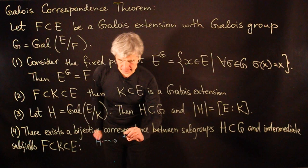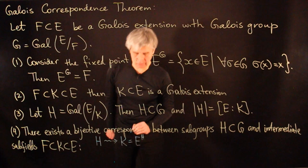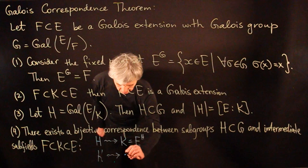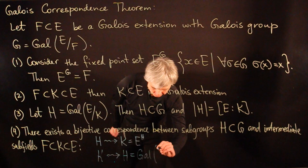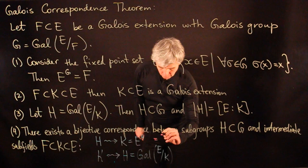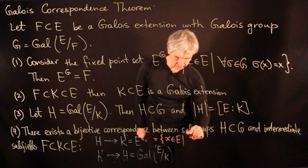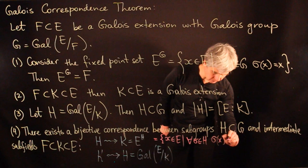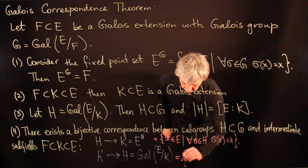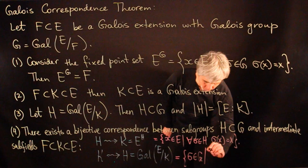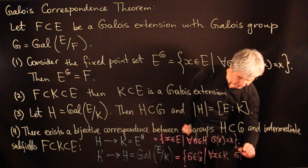Part four: there exists a bijective correspondence between subgroups H in G and intermediate subfields K between F and E. Under this correspondence, for each subgroup H we associate the subfield K which is the fixed points of E with respect to H — the set of x in E such that sigma of x equals x for all sigma in H. And to each subfield K we associate the subgroup H = Gal(E/K), the set of sigma in G such that sigma of x equals x for all x in K.